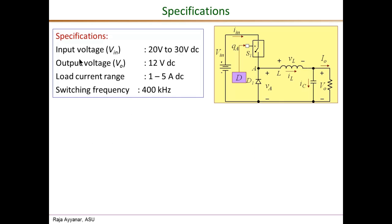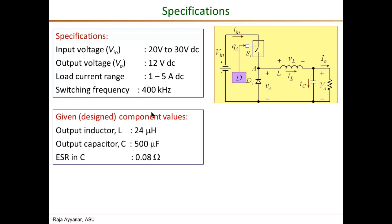The power stage specifications are: input voltage ranging from 20 to 30 volts. For the design of the controller I will assume a nominal voltage of 25 volts, but I will verify that the system is stable and has good phase margin at all input conditions. The output voltage is to be regulated to 12 volts, and the load current can vary from 1 ampere to a maximum of 5 amperes.